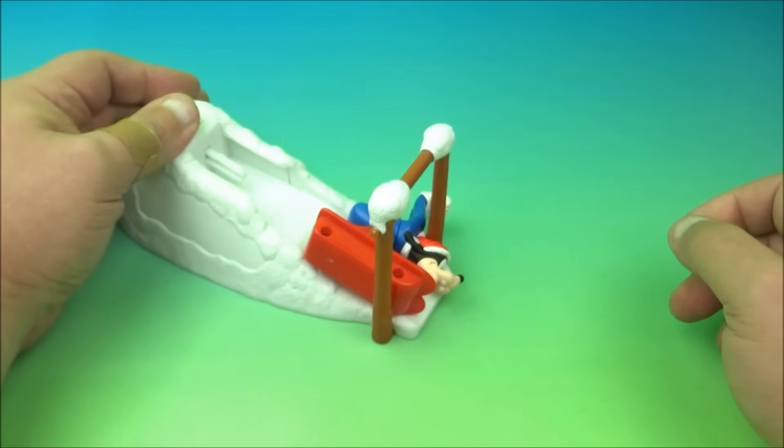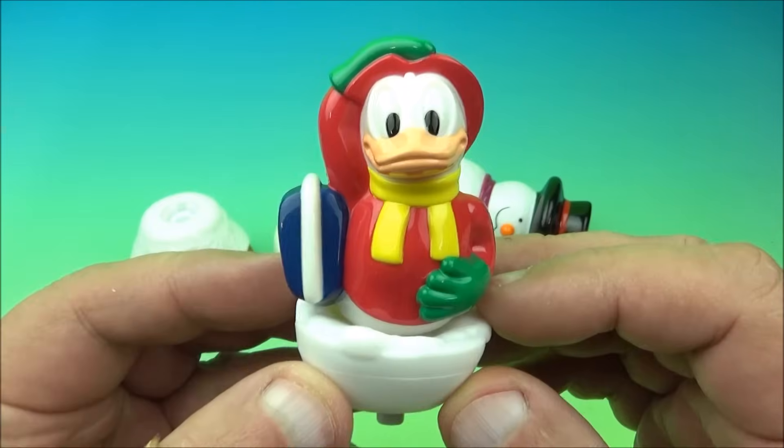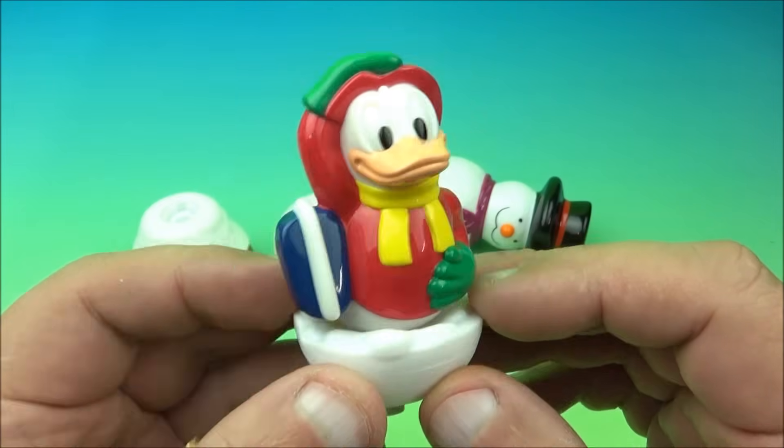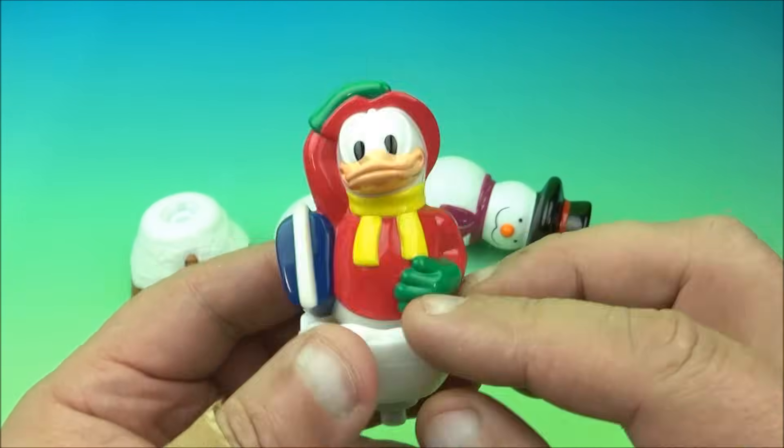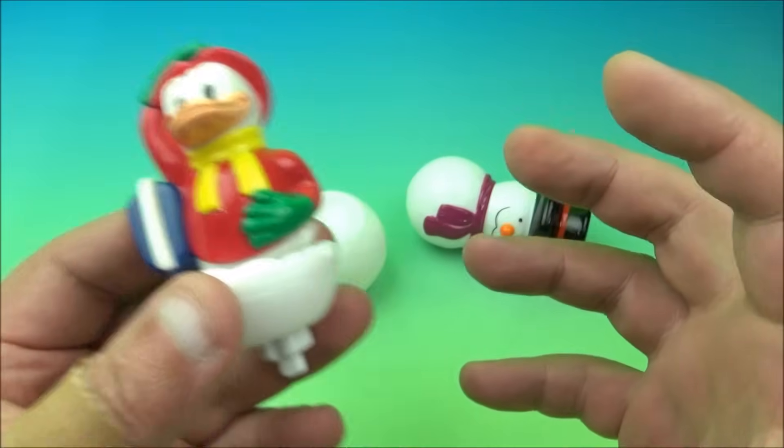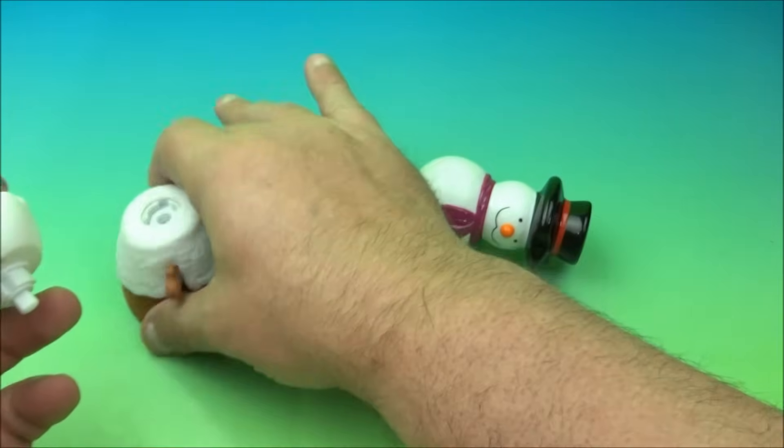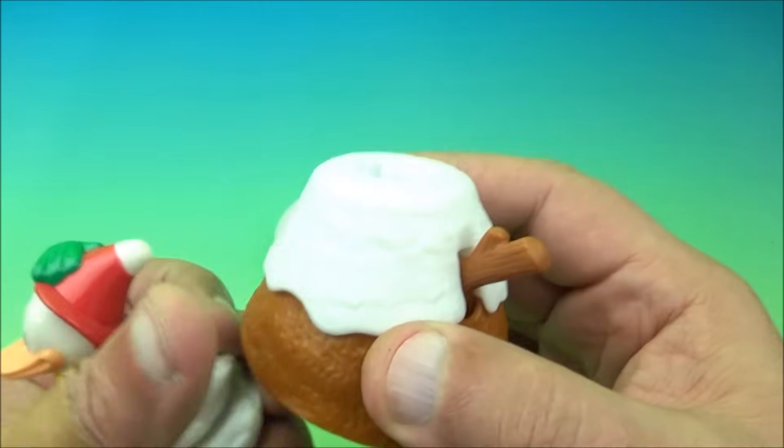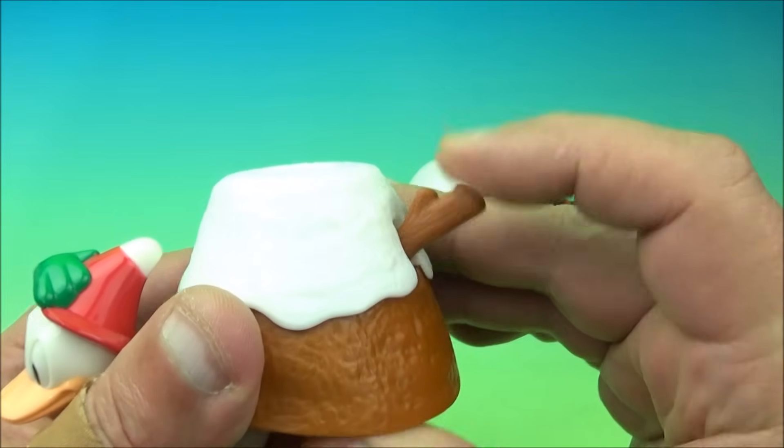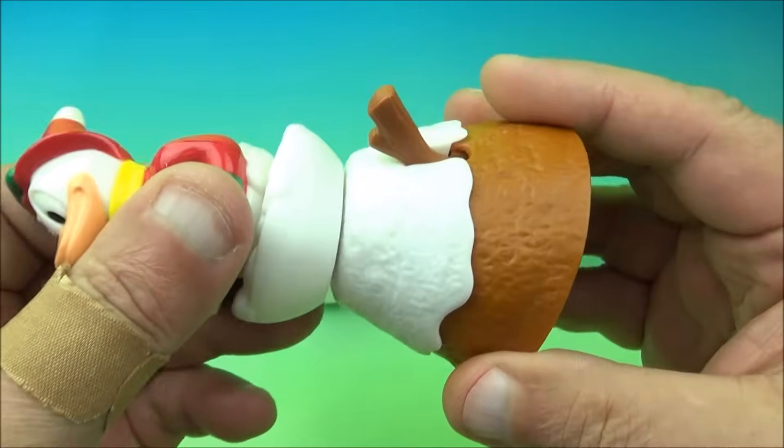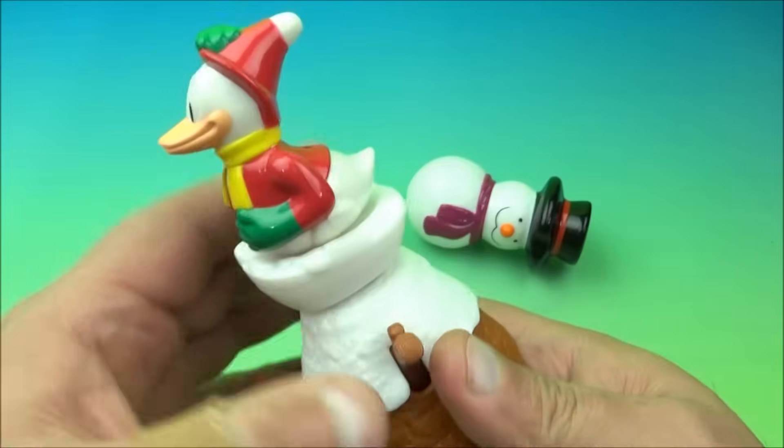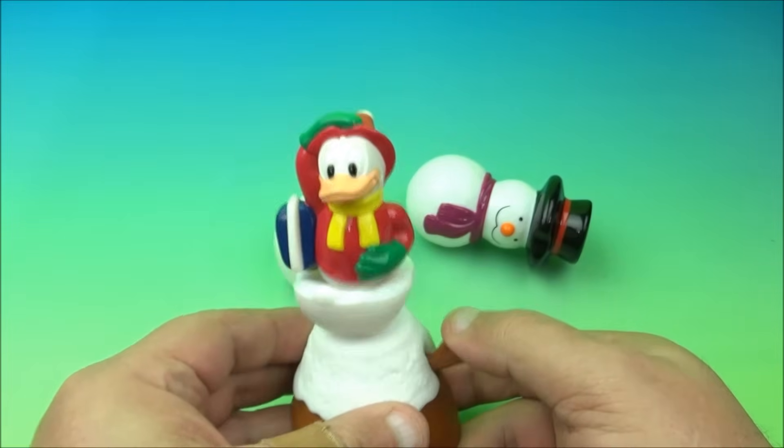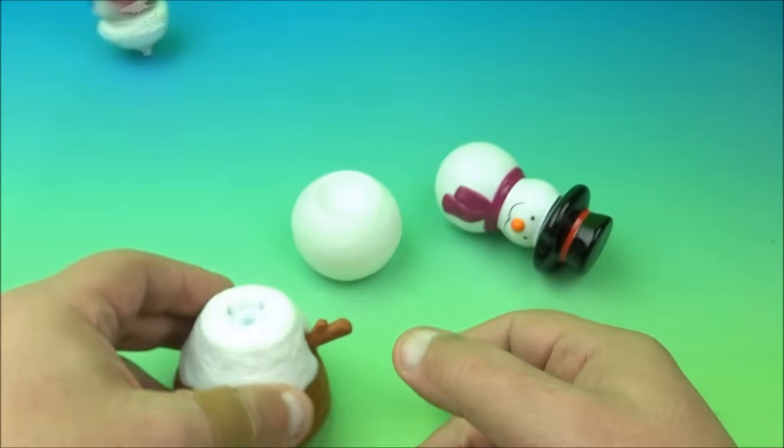So the next one up is Donald Duck and it looks like he's ice skating. The gimmick with Donald Duck is he's a spinning top and it comes with a couple other pieces here. So we have the launching base right here and then you see this little stick, this is like the release mechanism. So all you do is you place it on here like so and you wind it up and then you pull this down and watch this, there he goes.